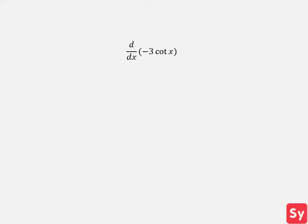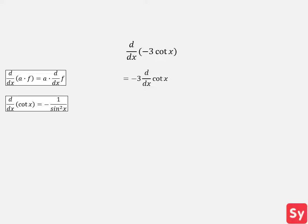Let's see our first example. We want to compute the derivative of negative 3 cotangent of x. We first use the multiplication by constant rule to pull out the negative 3. Next, we want to compute the derivative of cotangent of x, so we recall its derivative and plug that in. Now we can simplify the solution, and we will get 3 over sine squared of x as our answer.